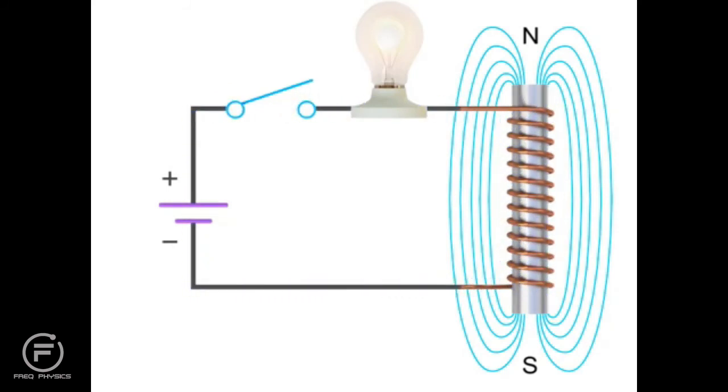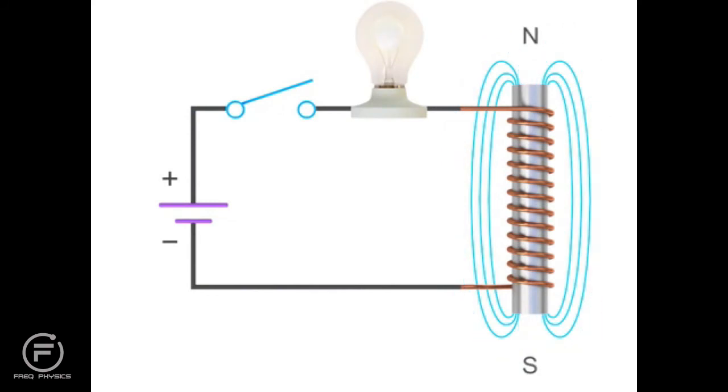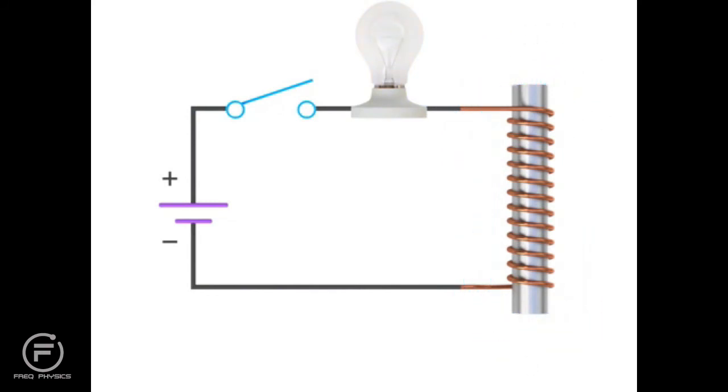If you open the switch and stop the flow of current from the source, the electromagnetic field will diminish rapidly and simultaneously release stored energy in the form of voltage. It will actually generate enough voltage to cause a spark across the switch as it opens.